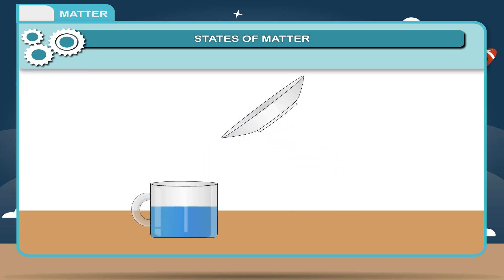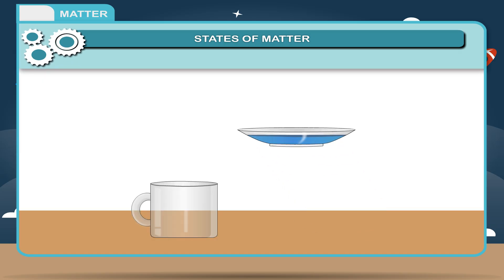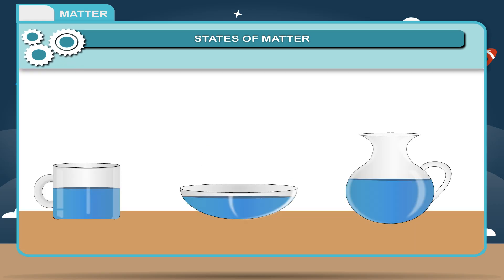Again, pour the water into a cup. It takes the shape accordingly. Observation: Water takes the shape of the container when it is poured into it. Result: Liquids do not have a definite shape.